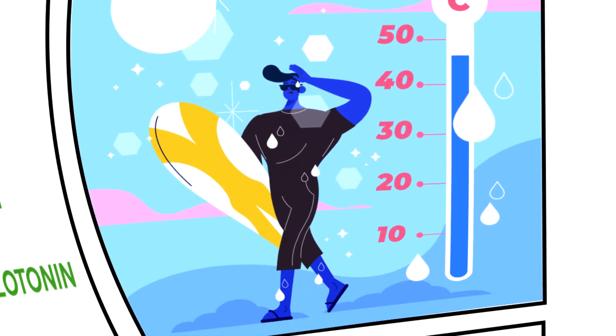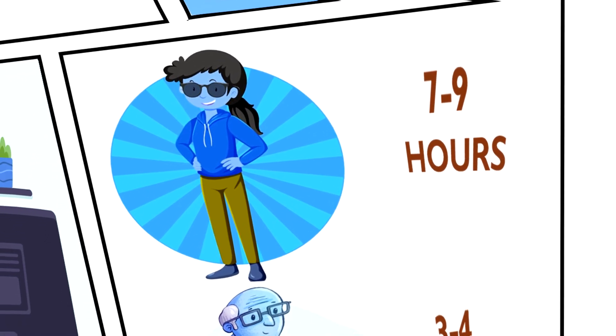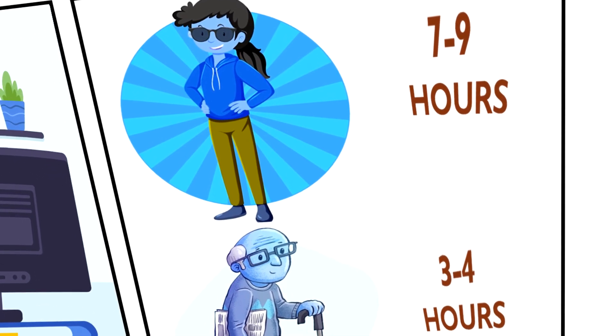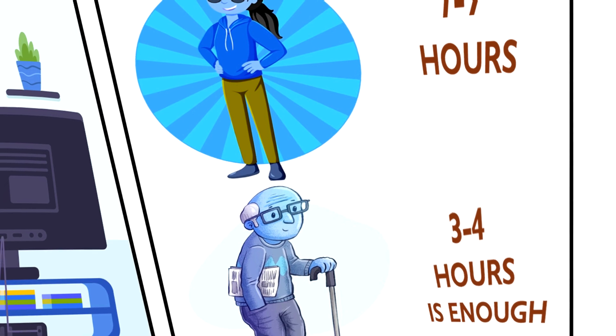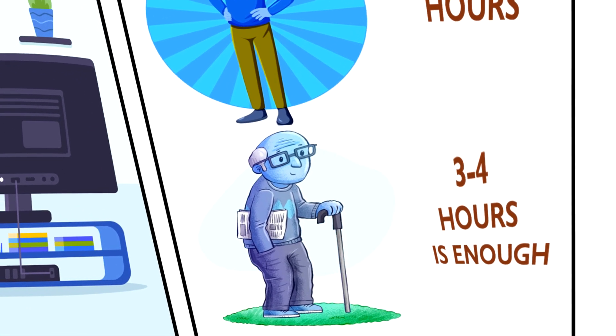But how much sleep is required for people? Well, it depends on person to person. A young adult typically needs seven to nine hours of sleep, and as you age this duration reduces. Some people are short sleepers requiring four to five hours of sleep to function normally, while others require more than nine hours.